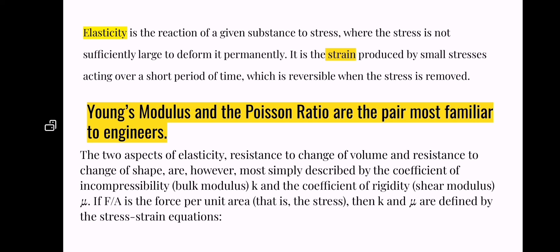Young's modulus and the Poisson ratio are the pair most familiar to engineers. The two aspects of elasticity—resistance to change of volume and resistance to change of shape—are most simply described by the coefficient of incompressibility K and the coefficient of rigidity (shear modulus) μ. If F/A is the force per unit area, then K and μ are defined by the stress-strain equations.